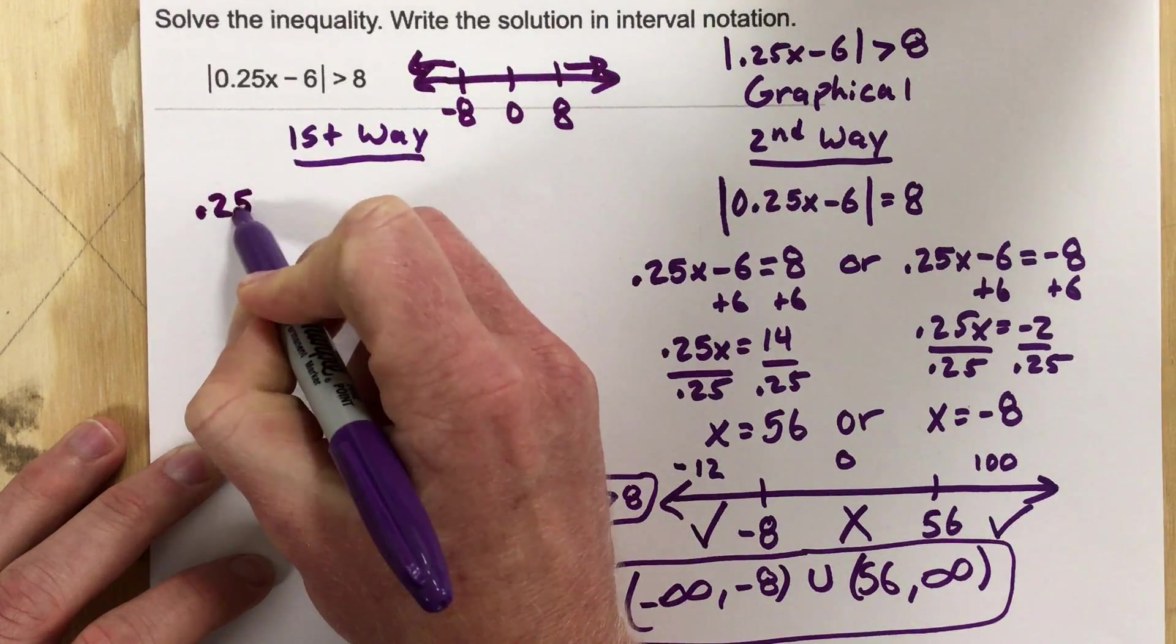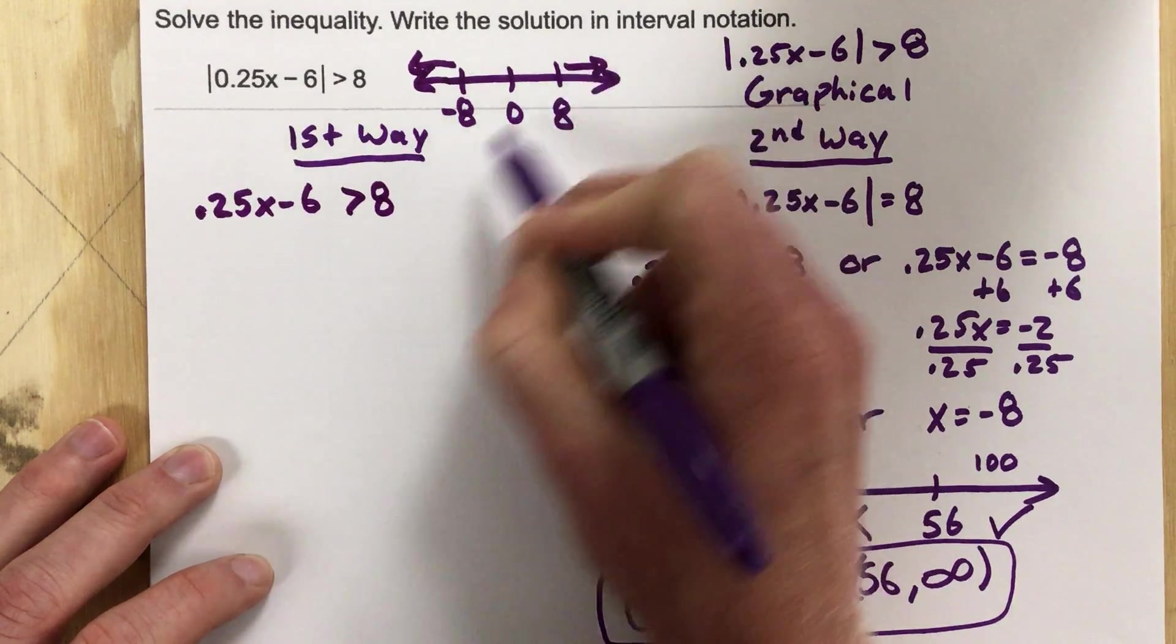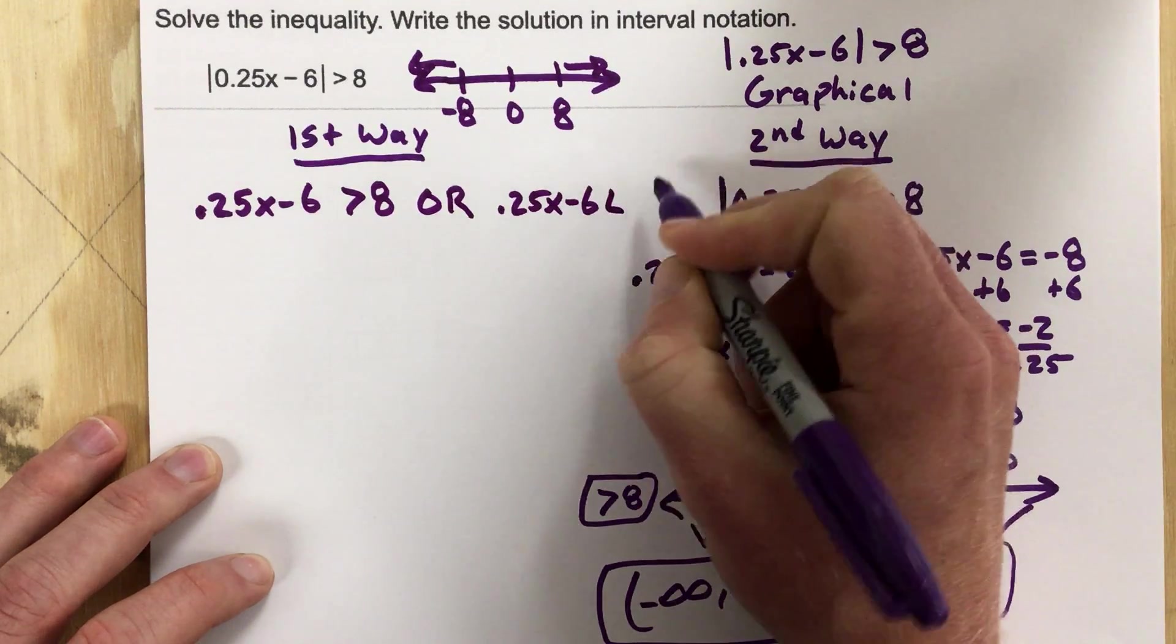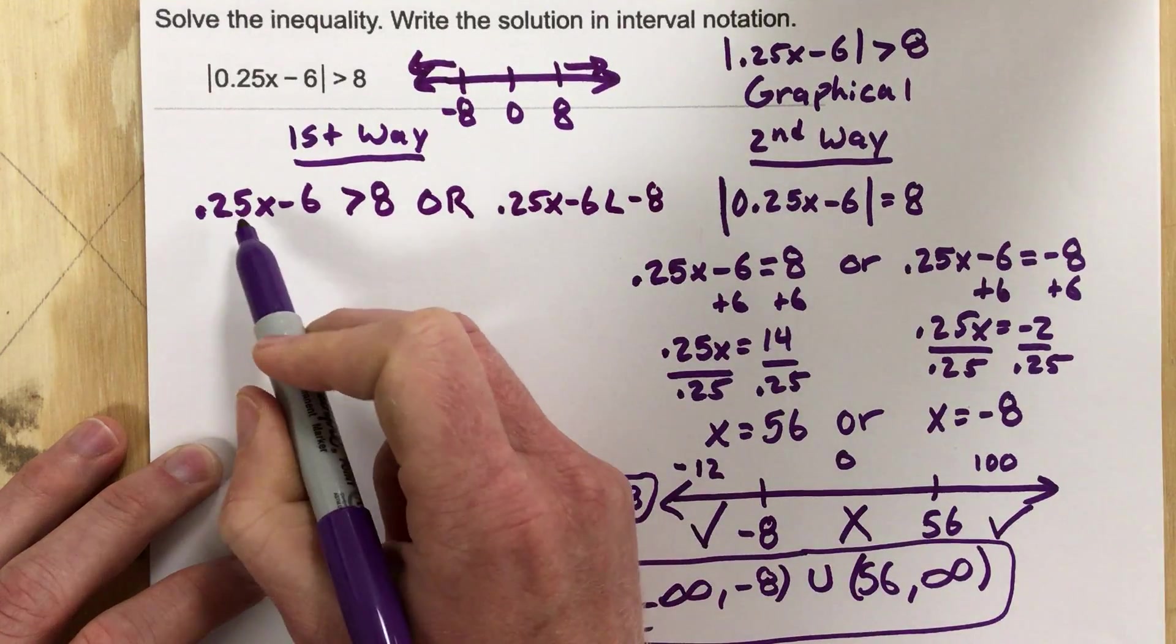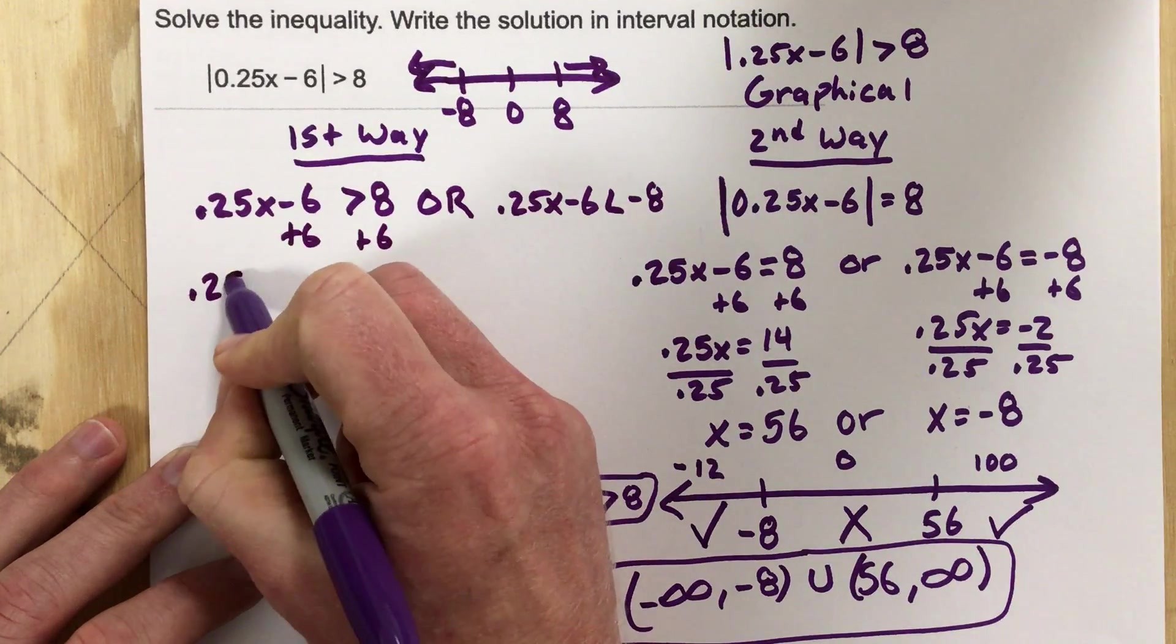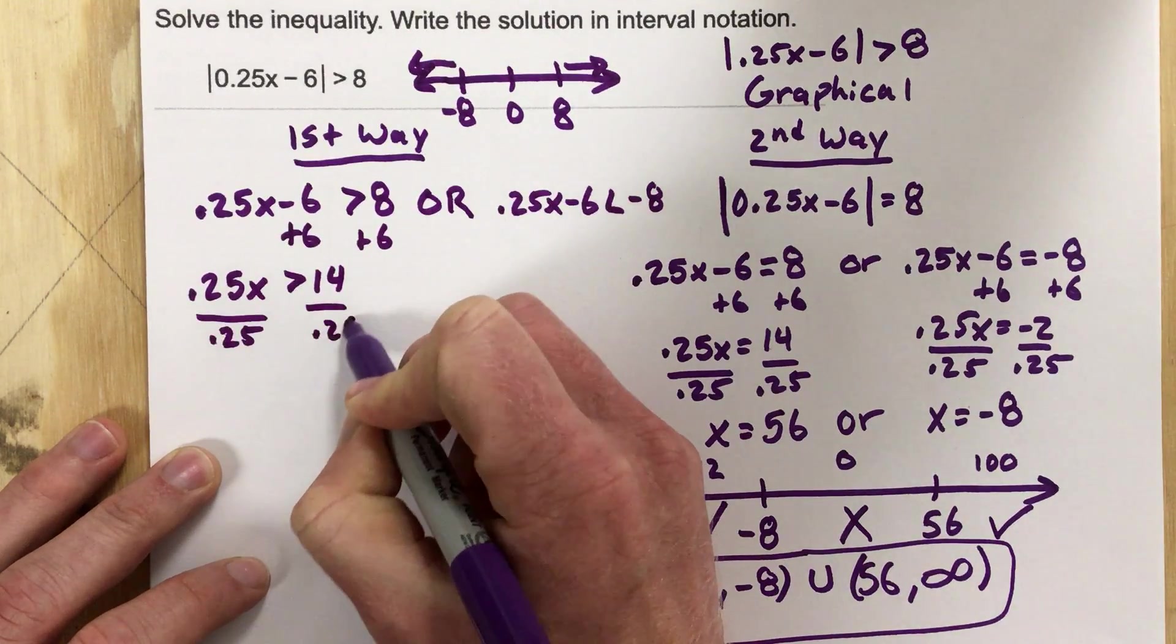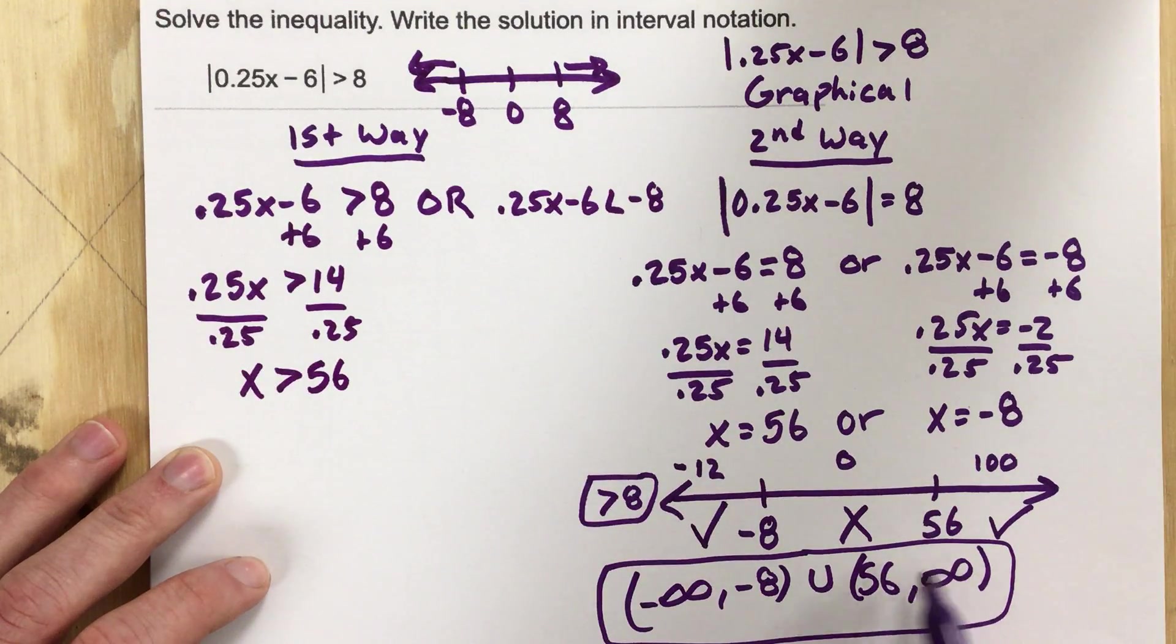We're going to write 0.25x minus 6 is greater than 8, that's what this says, or 0.25x minus 6 is less than negative 8. Because that's what this says, we flipped the sign there. I'm going to add 6 to each side, and I get 0.25x greater than 14 divided by 0.25, and I get x greater than 56, and you can see that is 56 to infinity here.